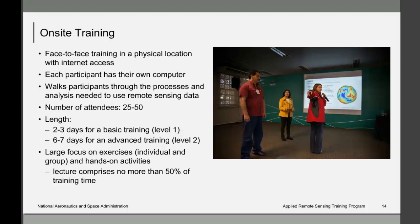The length of on-site training can range from days to weeks. For RSET, on-site trainings are two to three days for Level 1 and about two to seven days for Level 2. One of the big differences from online training is the heavy emphasis on hands-on activities — ideally less than 50% of the time is spent on lectures. Participants can also get one-on-one attention that is not possible during large online trainings.